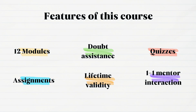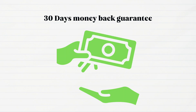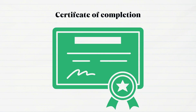These are some of the features of this course. In this course we have a total of 12 modules. We are also providing doubt assistance, and you are going to get quizzes and assignments during all the modules. You can have lifetime validity and one-to-one mentor interaction. Along with this course we are giving you a 30-day money back guarantee — no questions asked — and after the completion of this course you are also going to get a certificate.